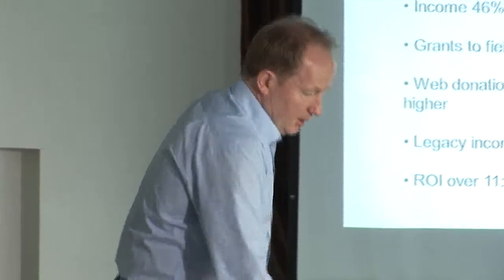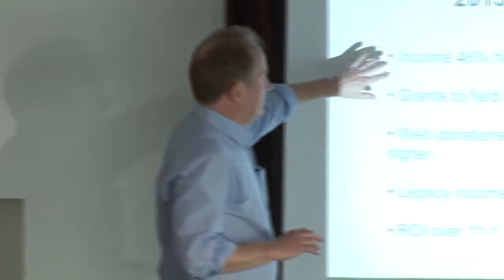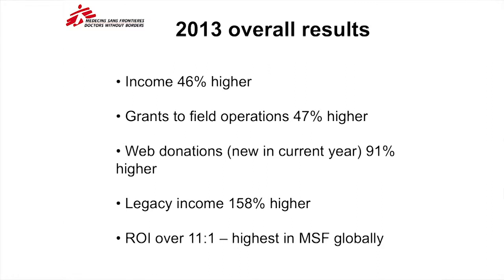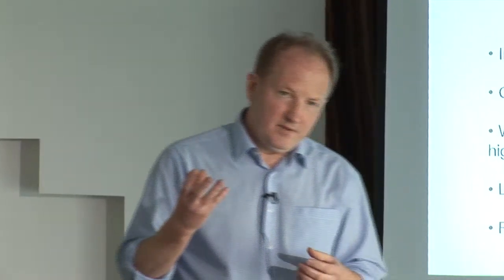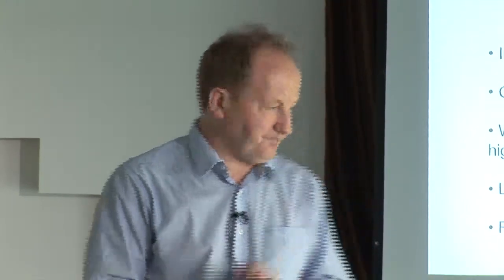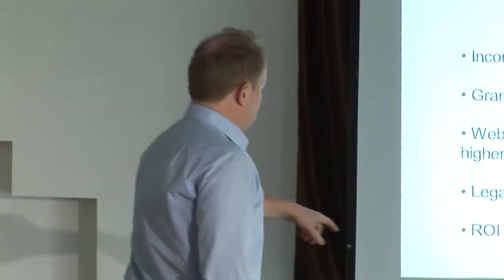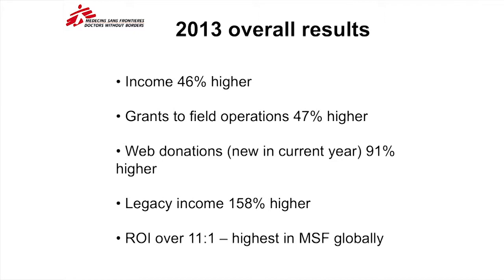But this for me is the more important part of the story. We were doing all of these small things in combination successfully. Overall our income went up by 46 percent in one year, and previously it flatlined more or less for four or five years. The money that went to places like South Sudan increased by the same amount. Web donations within the current year, new ones, went up by 91 percent. It's a combination of things that led to this result. For every pound we spent on fundraising we raised 11.